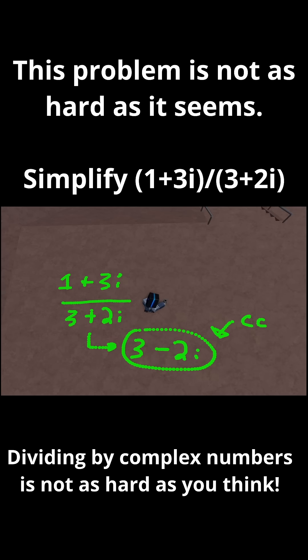But now what do you do with the complex conjugate? What you need to do is you need to multiply the numerator and the denominator by that complex conjugate. 3 minus 2i, 3 minus 2i.